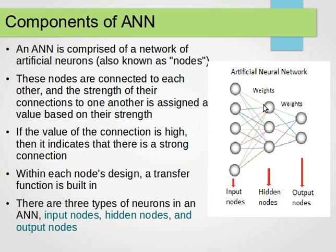Outputs from one layer become inputs to the next layer. Those nodes are connected to each other, and the strength of their connections is assigned a value based on their strength. So the connection strength has a value. If the value of the connection is high enough, it indicates a strong connection. With each node's design, a transfer function is built in, so for every node we have a transfer function.